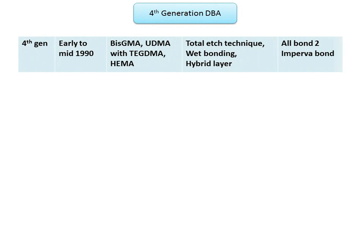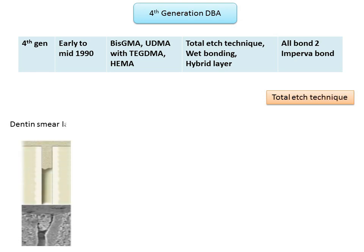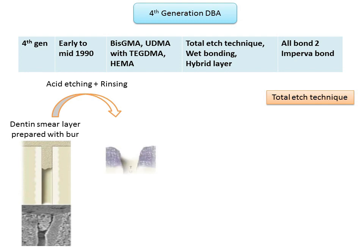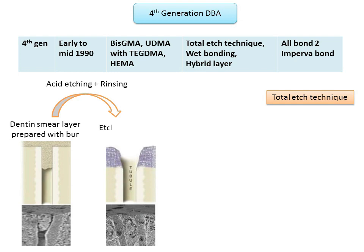Following cavity preparation with a burr, a smear layer is formed on the exposed dentinal surface. The total etch concept involves etching of both the enamel and dentine simultaneously. Acid etching is done using 37% phosphoric acid for 15 seconds, and the tooth is then washed and dried to leave the dentine surface moist, which prevents the collapse of collagen fibers. The second image shows a diagrammatic representation of etched dentine with exposed collagen fibers, and below that an electron microscopic image of the same, showing the dentinal tubule opened up and collagen fibers exposed.